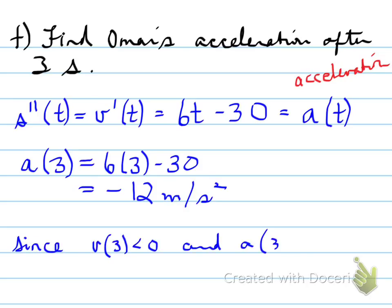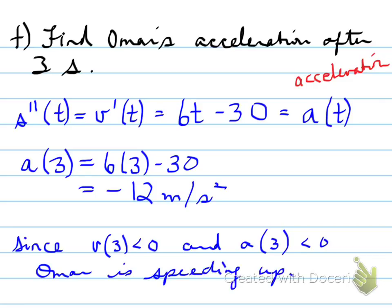Since the velocity at 3 is less than 0 and the acceleration at 3 is less than 0 — the velocity is negative because he's traveling backwards in that range, and the acceleration is also negative — two negatives imply that Omar is speeding up. This comes from the velocity being negative and the acceleration being negative.